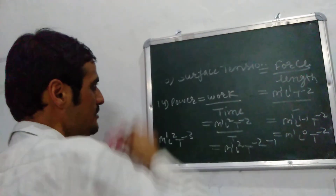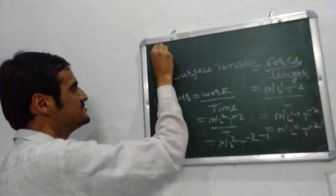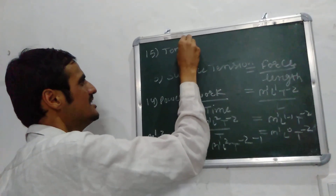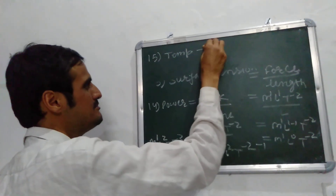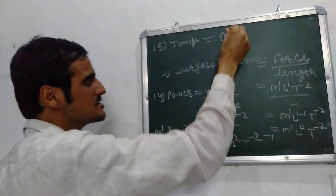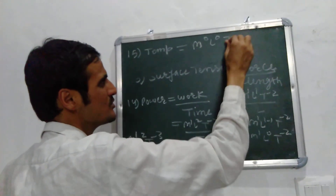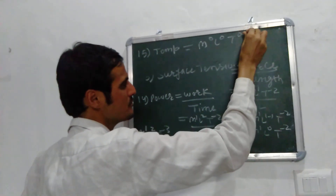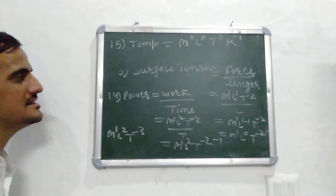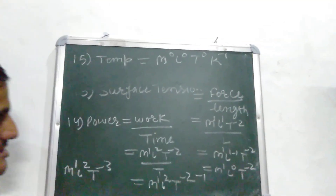Next is the dimensional formula of temperature. The unit of temperature is Kelvin, so there is no mass, no length, and no time involved. We consider it as Kelvin — or in some contexts, Kelvin inverse.